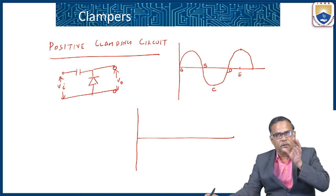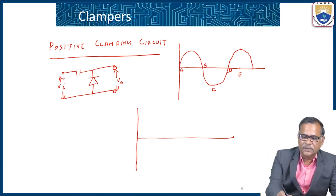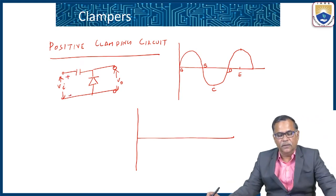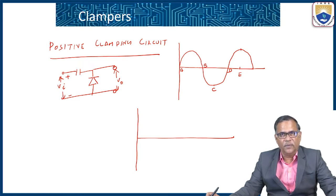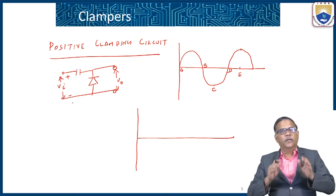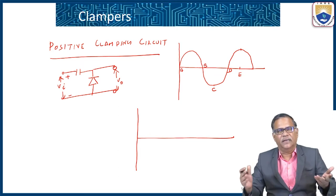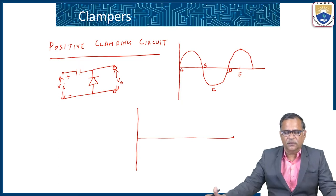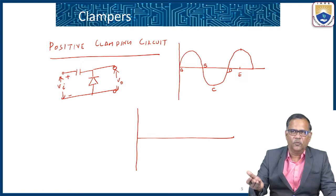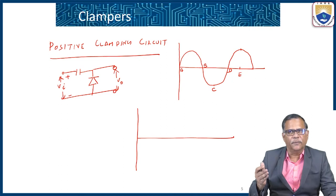During the positive half cycle, between points A and B, the voltage is positive at one terminal and negative at the other. The diode is reverse biased because the cathode is at positive voltage and the anode is at negative voltage. When the diode is reverse biased, it acts as an open circuit. Therefore, all the input voltage appears across the output terminals.